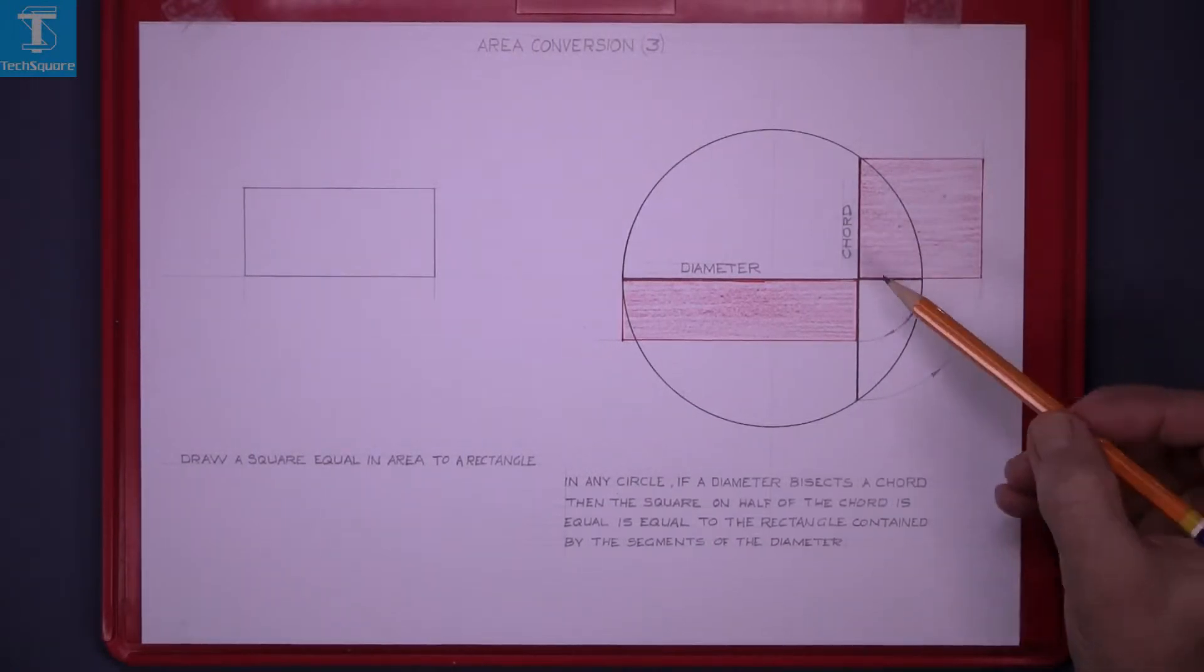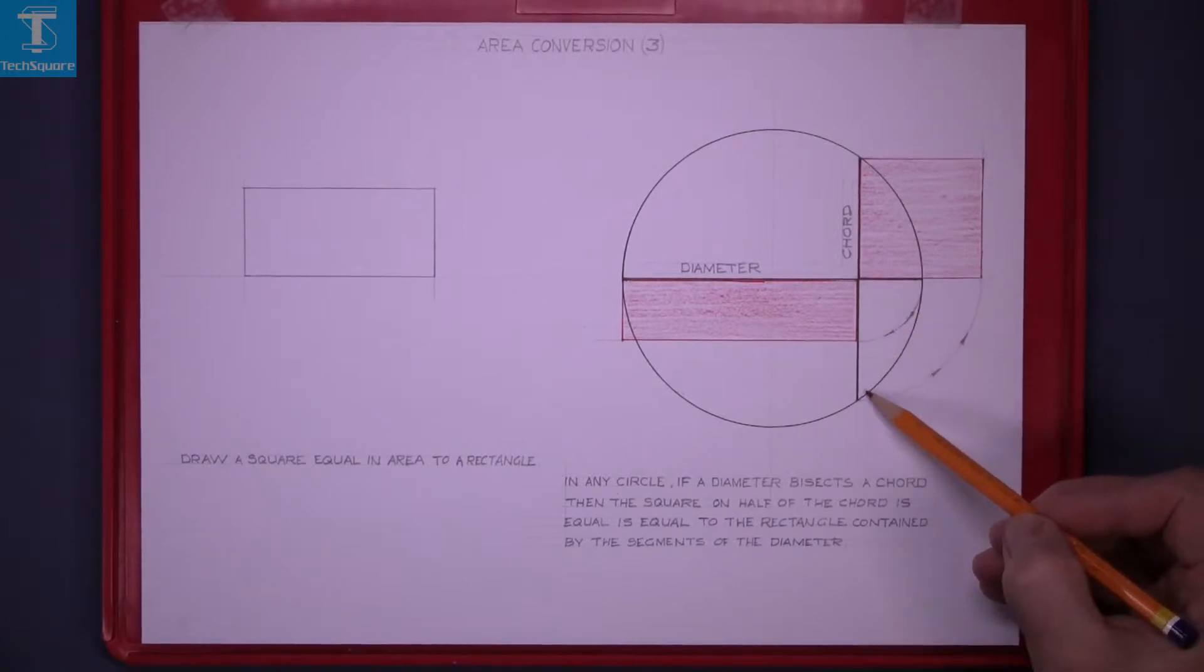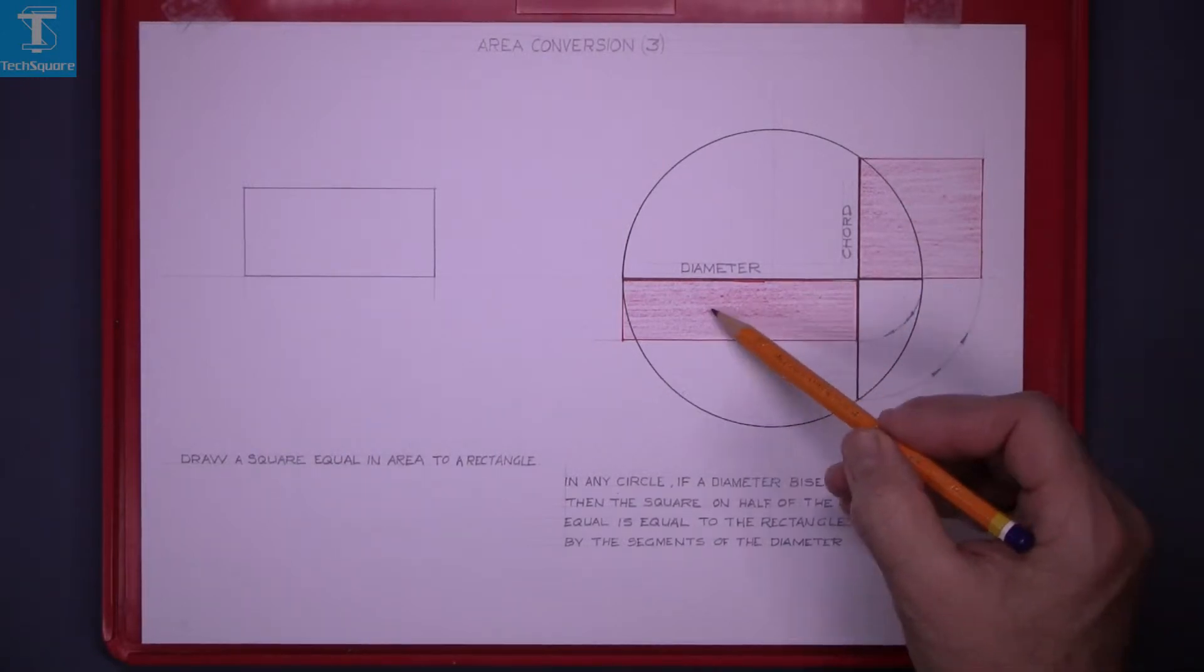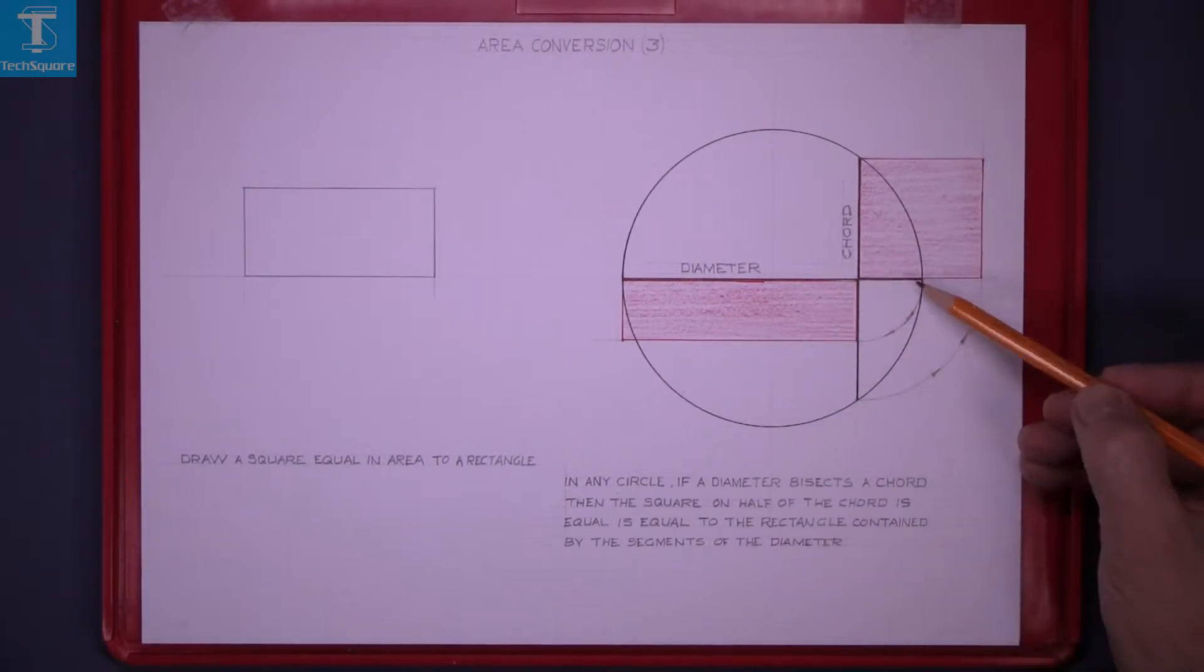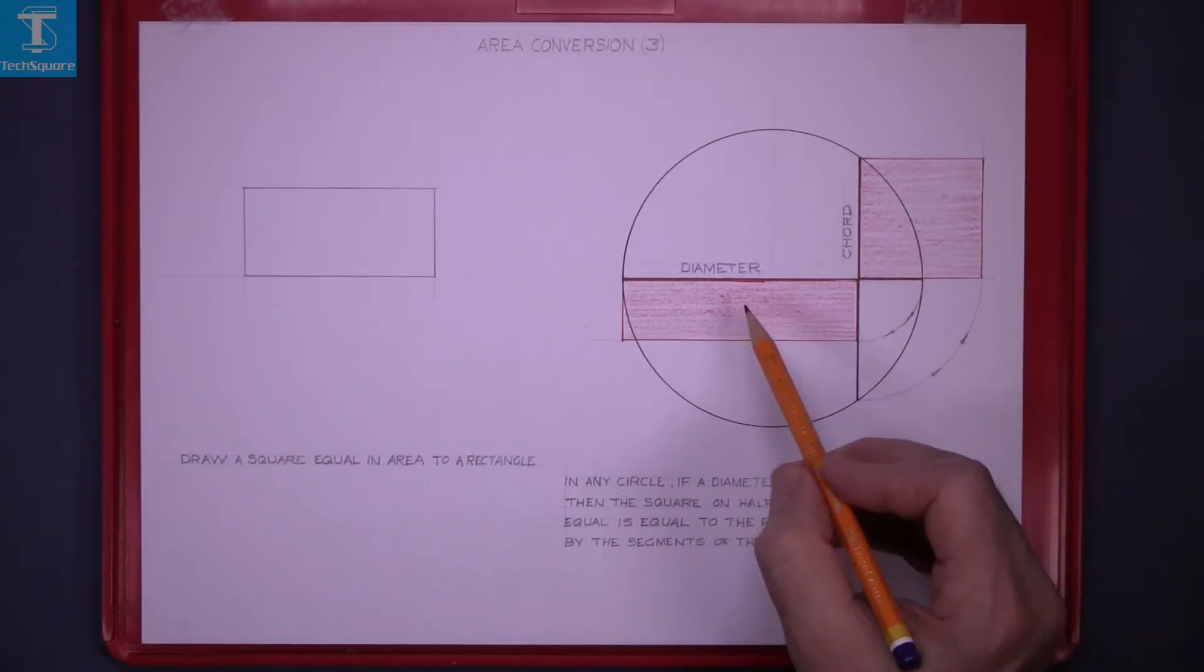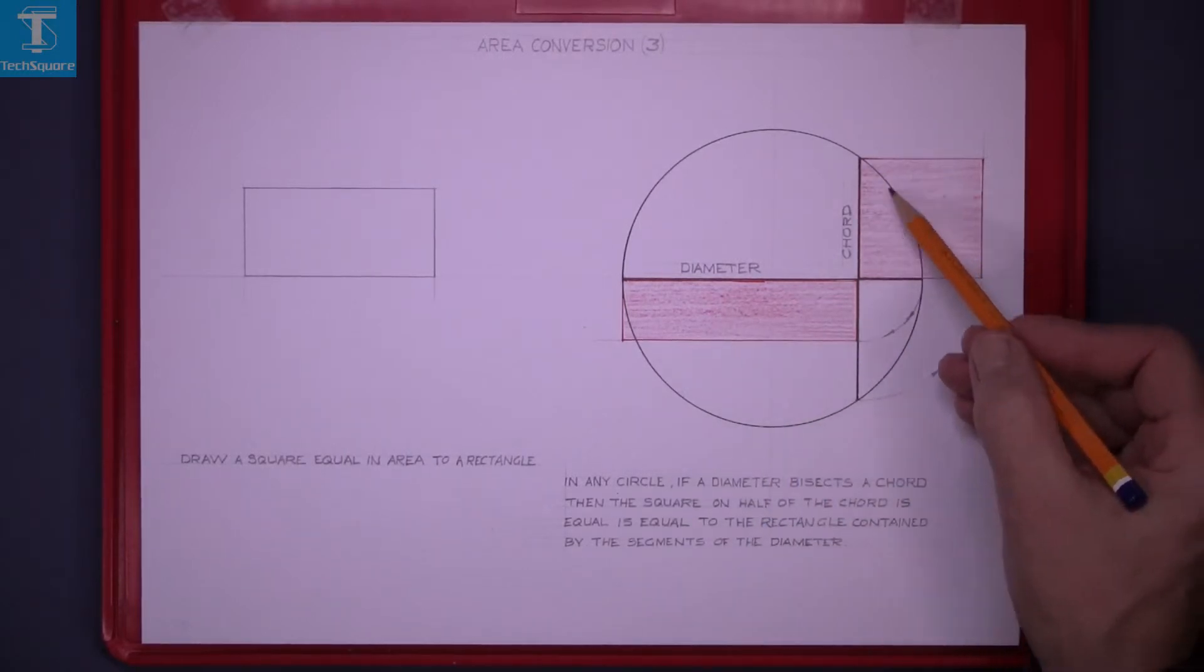What I have done here is I have put the point of compass in here and rotated this side up and drawn this square here on the chord. To get the rectangle, I have taken this section of the diameter and rotated it down and drawn in the rectangle. This rectangle is equal in area to the square.